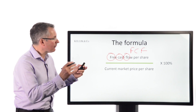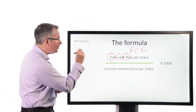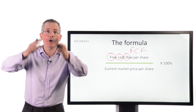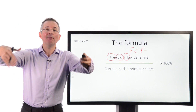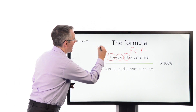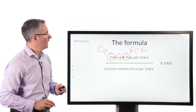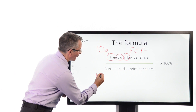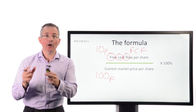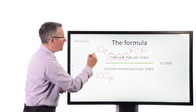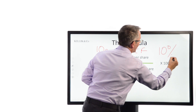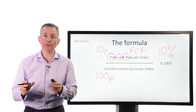To give a quick illustration: free cash flow per share is calculated by taking the firm's total free cash flow, dividing it by the number of shares in issue. Let's say that comes out at 10p. The current market price per share is 100p — you've just looked it up. Then you'd have a free cash flow yield of 10 over 100, as a percentage, which is 10%. That's a very quick, basic illustration of the mechanics.